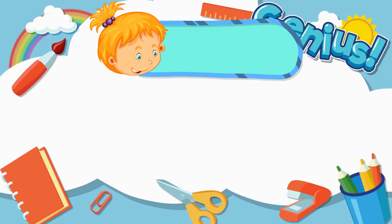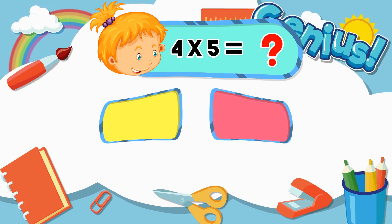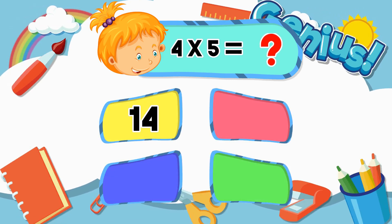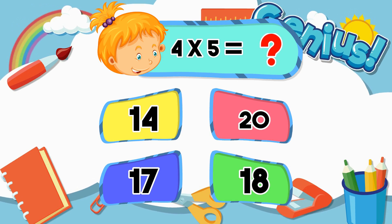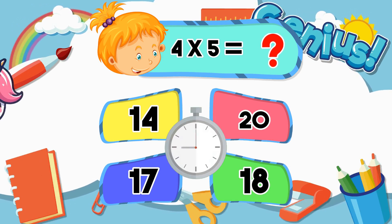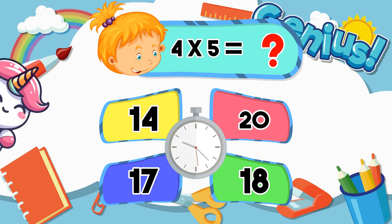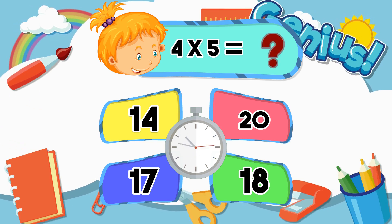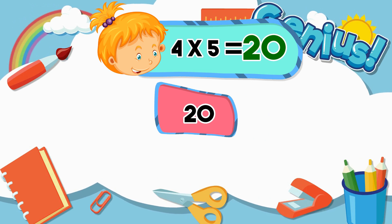What is 4 times 5? 14. 20. 17. 18. Correct answer: 20.